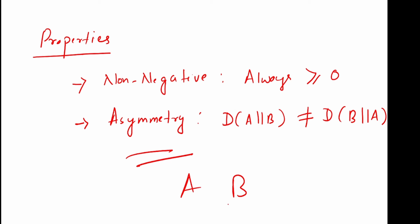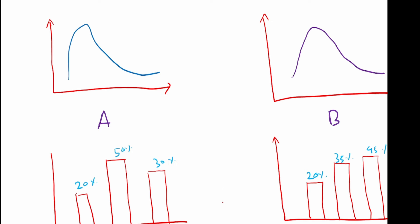We can visualize this. Here are distribution A and distribution B, both continuous. You really want to know if there's any difference between these two data sets. Think about it in research work — for example, in social science research, you collected data 10 years back and now you've collected data after 10 years. You want to know whether there is any difference in these two data sets. You can use KL distance to measure the divergence and quantify that.